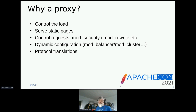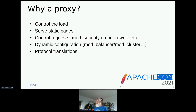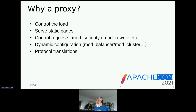Why do we need a proxy? We might need a proxy to control the load — basically, we can limit the number of connections we're going to allow to one Tomcat. We can also use the proxy to serve static pages, for example images or JavaScript. We also can use it to control requests. The most common tool used is mod_rewrite. With mod_rewrite you can put a regular expression and forbid the proxying of a URL. With mod_security, you have tons of different rules you can use to prevent someone from the internet accessing the server.